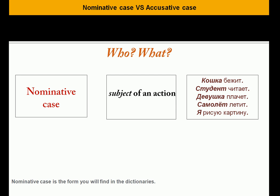Кошка бежит — the cat is running. Студент читает — the student is reading. Девушка плачет — the girl is crying. Самолет летит — the plane is flying. Я рисую картину — I'm drawing a picture. So you see, this is the subject of an action. And by the way, the questions that are answered are 'who' or 'what' — in Russian: кто, что.